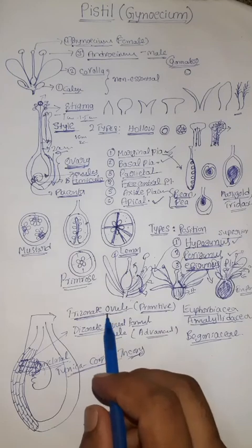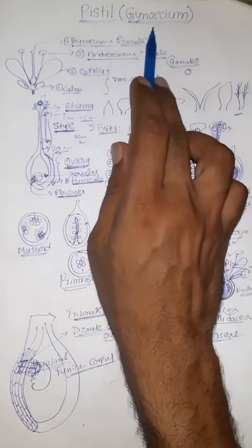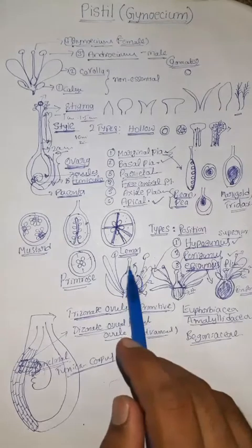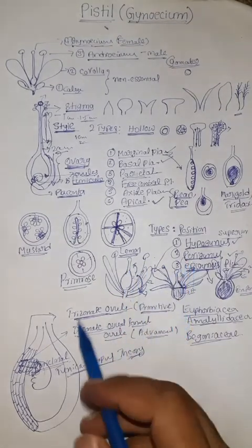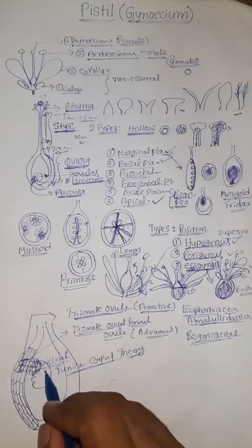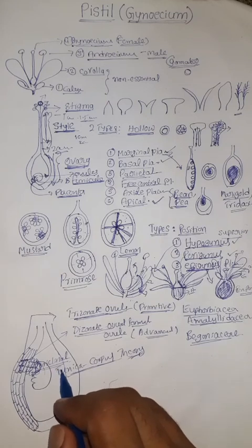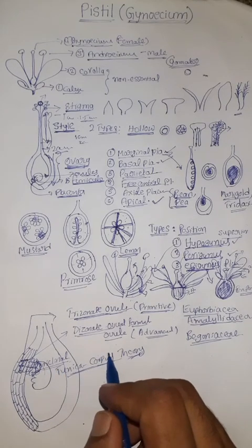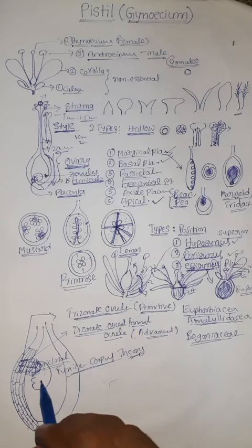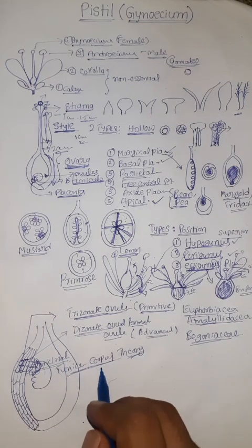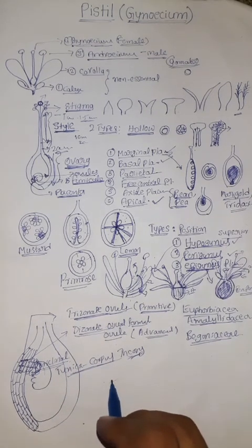This is all about the structure of Pistil or Gynoecium, types of placentation, types of flowers based on ovary position, and ovule initiation. In the next video, we will discuss the structure of an ovule and different types of ovules. Thank you.